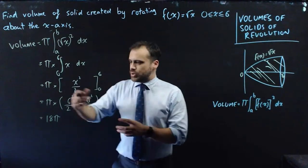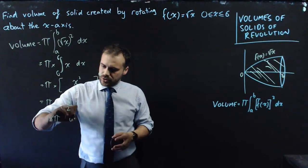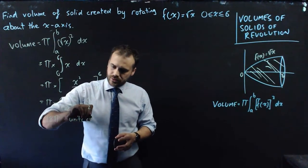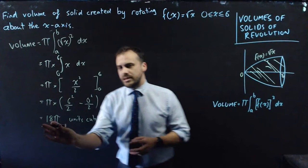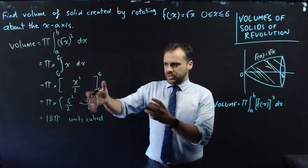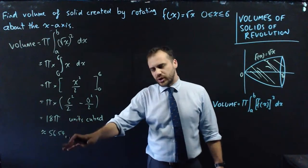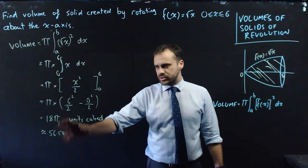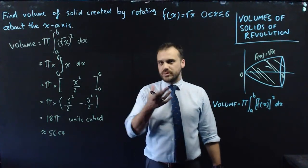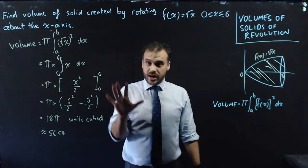It's a volume, so 18 units cubed, or 18 pi units cubed. Approximately 56.54, but you wouldn't go here unless you really needed to. 18 pi units cubed is more precise.